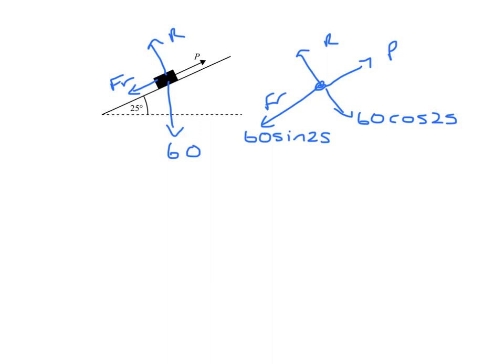We know that R is 60 cos 25. Friction will be μR, and using our answer to the previous question, that gives us 25.34.